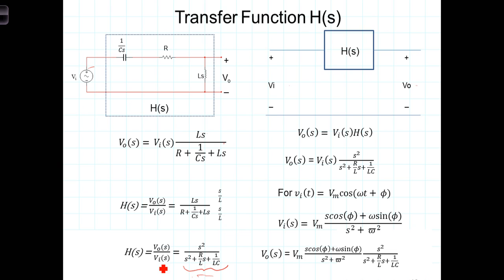Alright so now that we have H of S which again simply represents the ratio of the output to the input let's look at how we can use H of S to determine the output of a circuit for some specific input.